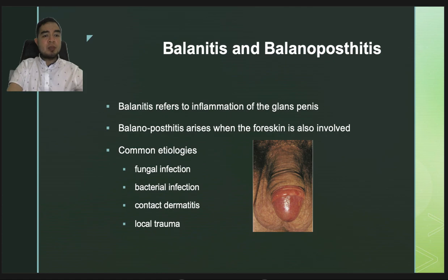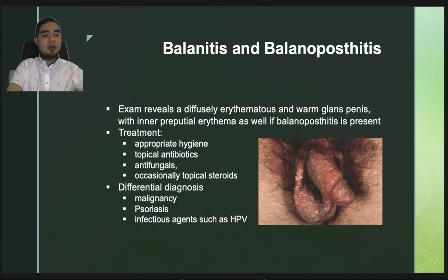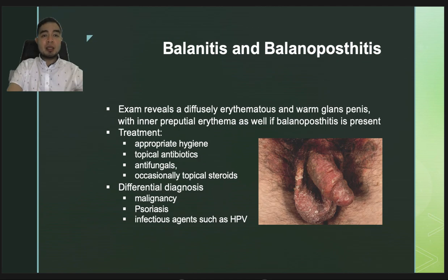The next infection is balanitis or balanoposthitis. Balanitis refers to inflammation of the glans penis; balanoposthitis arises when the foreskin is also involved. Common etiologies include fungal infection, bacterial infection, contact dermatitis, or local trauma. Exam reveals a diffusely erythematous and warm glans penis with inner preputial erythema. Treatment includes appropriate hygiene, topical antibiotics or antifungals, and occasionally topical steroids. If there is an inappropriate response to treatment, the differential diagnosis should include malignancy, psoriasis, or infectious agents such as human papillomavirus.